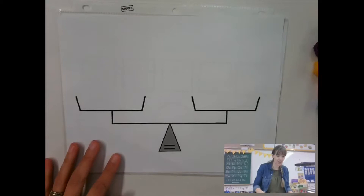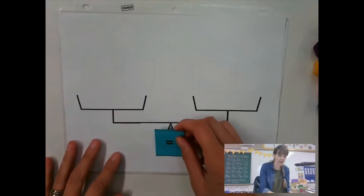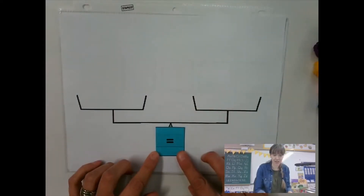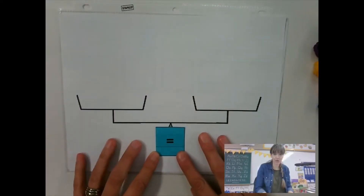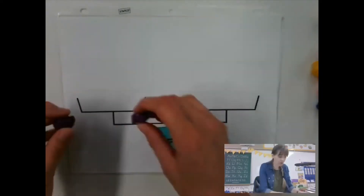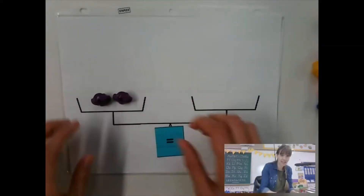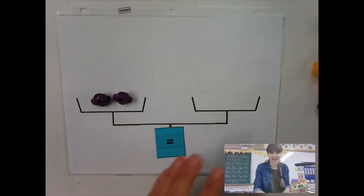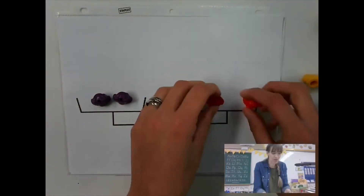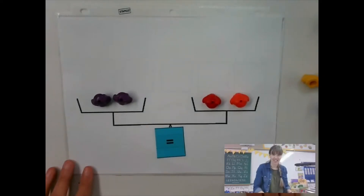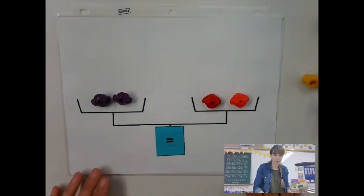We have been working on remembering what the equal sign is. The equal sign is like a balance. Whatever we put on one side of the balance, it has to be the same amount on the other side — just like that, to equal it out.